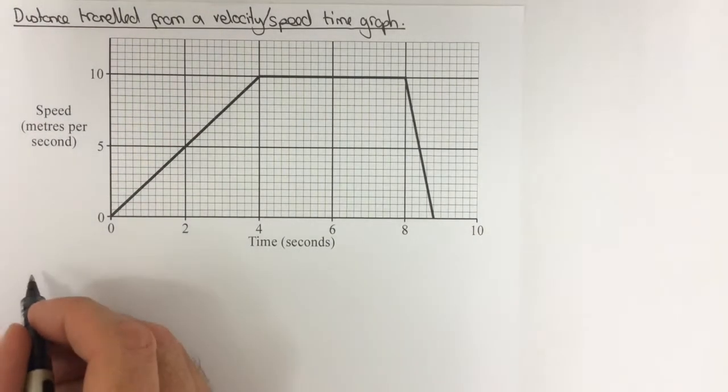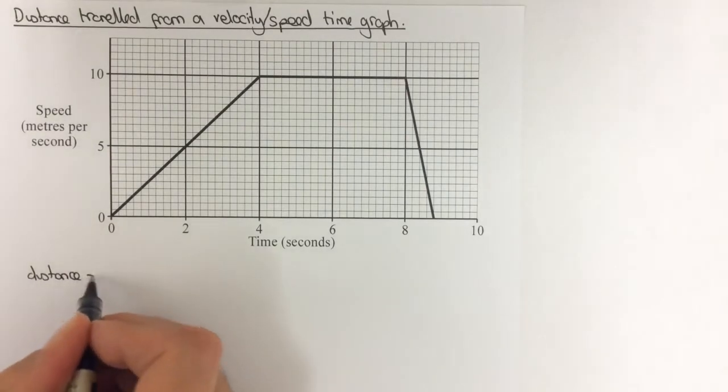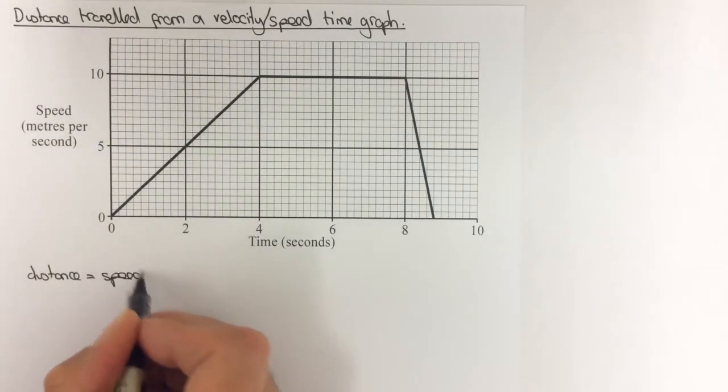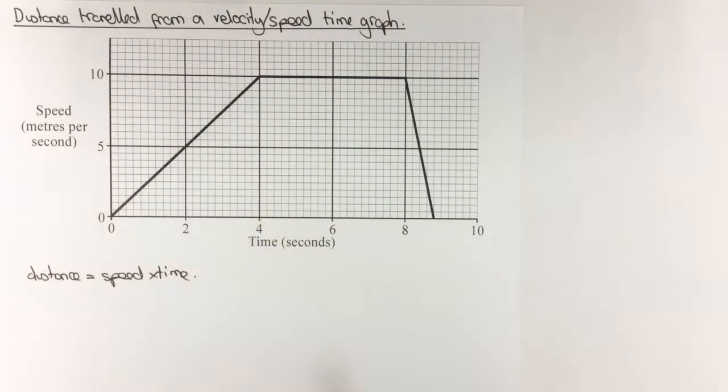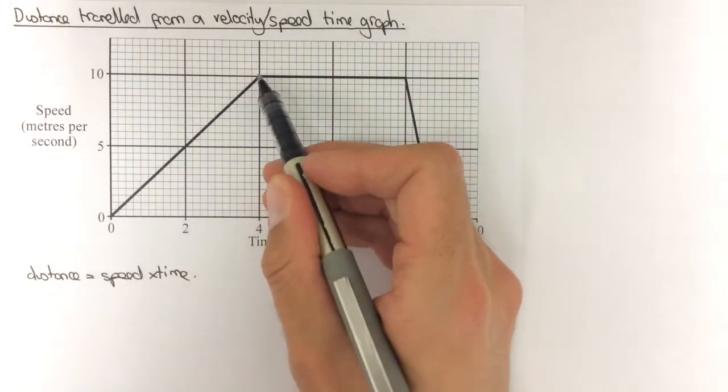Now people often remember the equation that distance travelled equals speed times time. The problem is that we can't use this equation directly if we are in a section like this where the speed is changing.